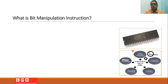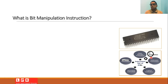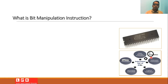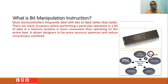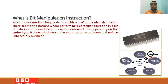The microcontroller unit 8051 has many instructions, and these instructions are classified into different categories such as data transfer instructions, arithmetic instructions, logical instructions, branching instructions, subroutine instructions, and the last category is bit manipulation instructions. It is possible that by using the microcontroller you can deal with bits rather than bytes — you can set a bit, clear a bit, or make other bit-level manipulations.